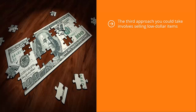The third approach you could take involves selling lower-dollar items. You start with your general list and send one update after another promoting a one-dollar product. When people buy these one-dollar items, they end up on your buyer's list. Behind the scenes, they are automatically unsubscribed from your main list.